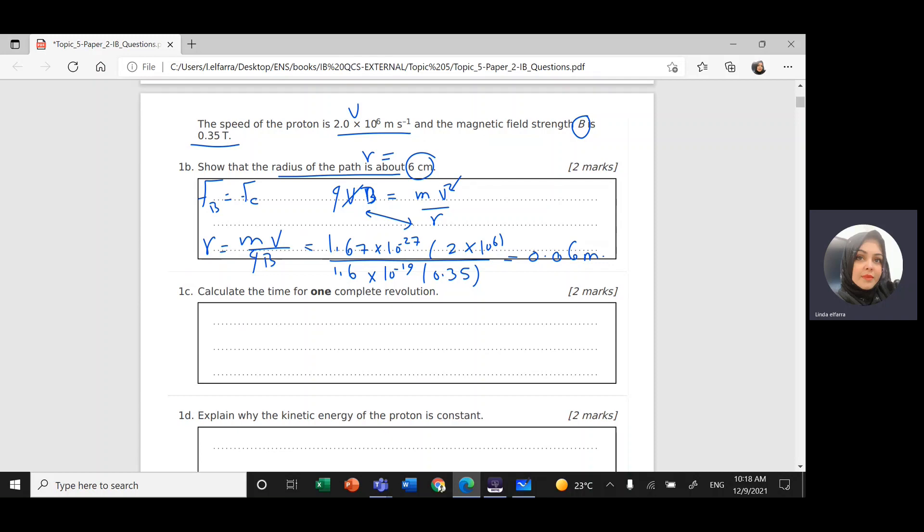And this will give me 0.06 meter. Convert it to centimeter times 100. So if I multiply this number by 100, it will give me 6 centimeters. The same answer.